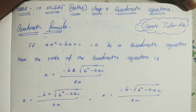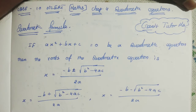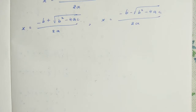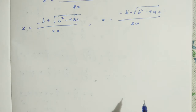In earlier classes, we used the middle term splitting method to find the factors, and we also used the completing square method. Now we can use the quadratic formula. This quadratic formula is derived from the completing square method. Now I will explain how the formula came about — how the formula is derived from the completing square method.